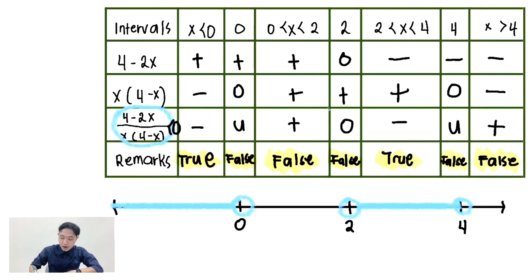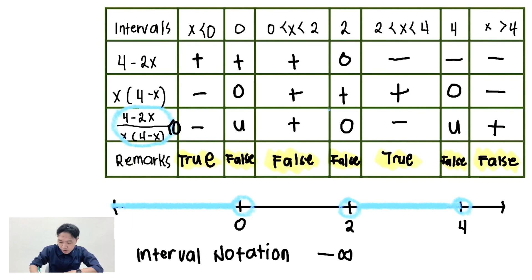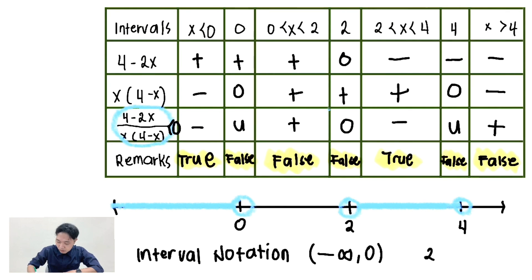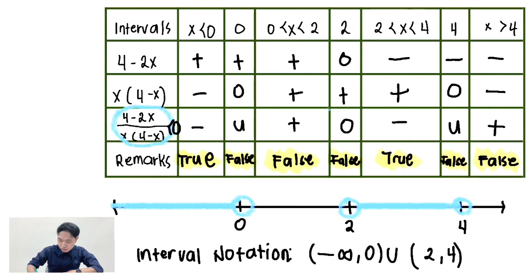Let's find the interval notation, going from left to right. Negative infinity to 0 — we use a round bracket because 0 is excluded. Then positive 2 to 4 — we use round brackets because both endpoints are excluded. Since they are on the same number line, we use union. So the final answer is negative infinity to 0, union, 2 to 4, written as (-∞, 0) ∪ (2, 4).